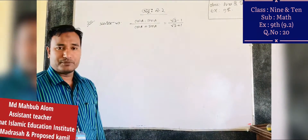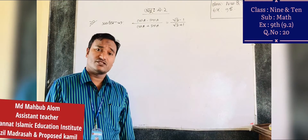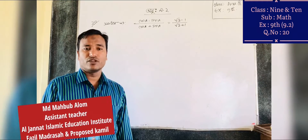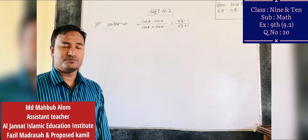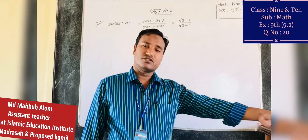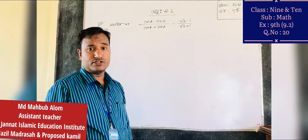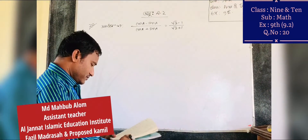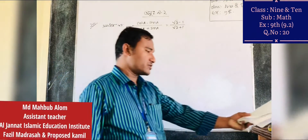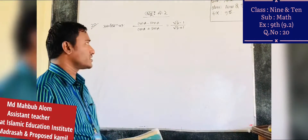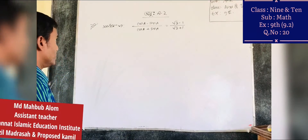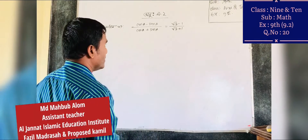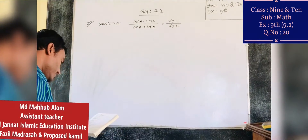This is the online class, Exercise 9.2, Question No. 20. The problem tells us to solve where the value of h is 0. We need to compare: the value of cos A minus sin A over cos A plus sin A equals root 3 minus 1 over root 3 plus 1.